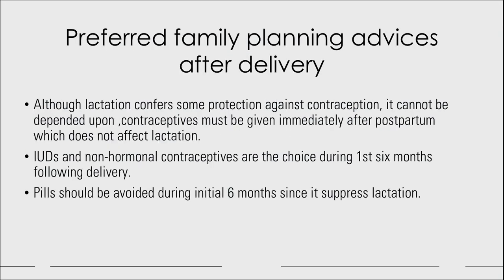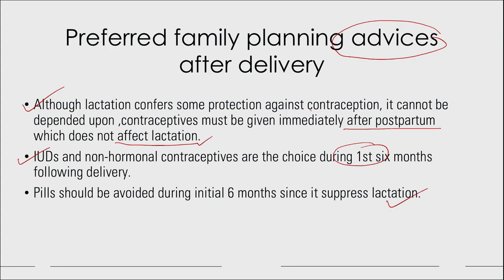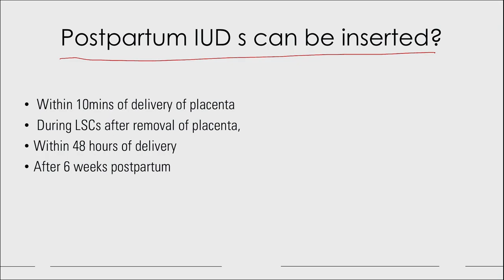Advise on preferred family planning after delivery. Although lactation confers some protection, it cannot be fully depended upon. Advise contraceptives that do not affect lactation — IUDs and non-hormonal contraceptives are the choice during the first 6 months following delivery. Pills should be avoided for the first 6 months as they can suppress lactation. Postpartum IUDs can be inserted within 10 minutes of placental delivery, during LSCS after placenta removal, within 48 hours of delivery, or after 6 weeks postpartum.